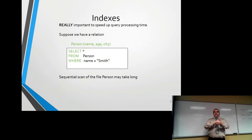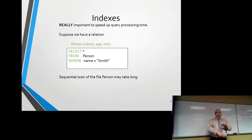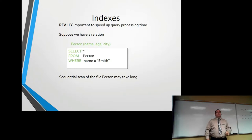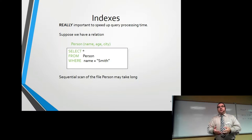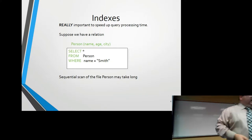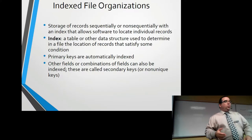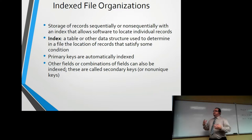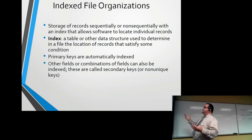That's what a sequential scan does — it goes through every single entry saying, 'Is the name equal to Smith? No. Is the name equal to Smith? No.' If you've got a couple hundred rows, that'll be fast. If you've got 10 million rows, it's going to be very slow because it's got to read through millions and millions of rows one after another.